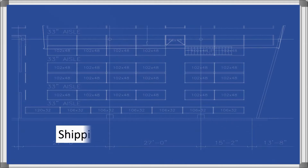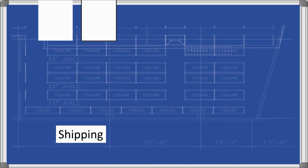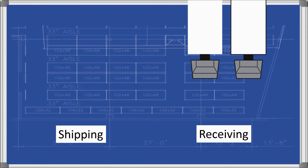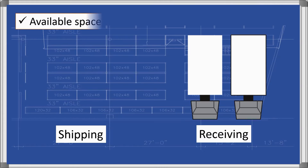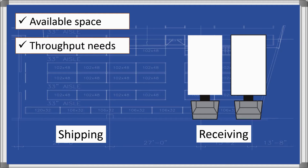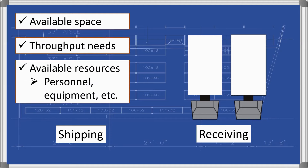When designing the overall layout of your warehouse, the shipping and receiving placement should be evaluated and chosen based on your available space, product throughput needs, and available resources.